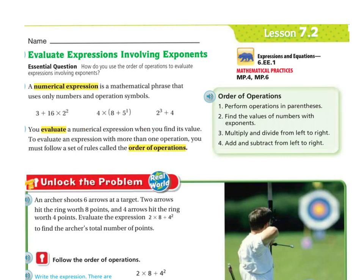Let's unlock the problem. An archer shoots 6 arrows at a target. 2 arrows hit the ring worth 8 points, and 4 arrows hit the ring worth 4 points. Evaluate the expression 2 times 8 plus 4 to the second power to find the archer's total number of points.